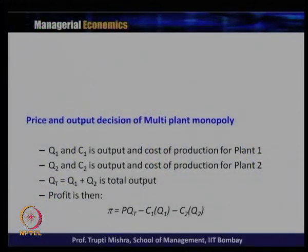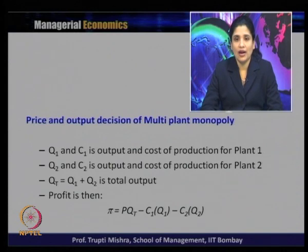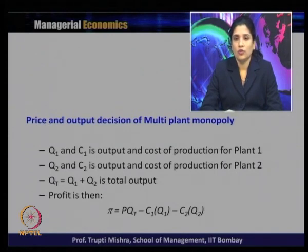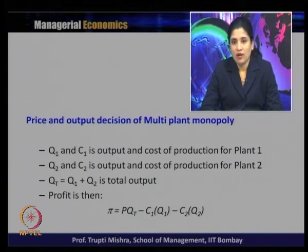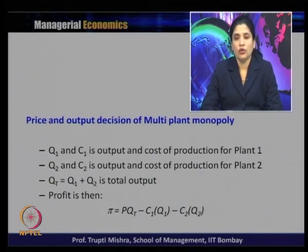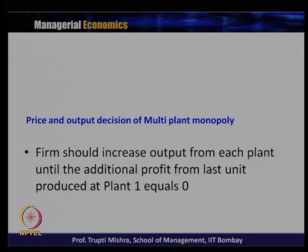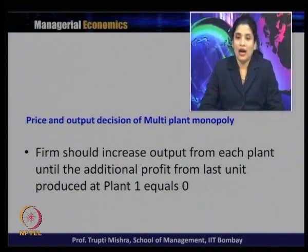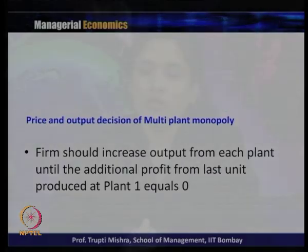If Q1 is output and C1 is the cost of production for Plant 1, Q2 is output and C2 is the cost for Plant 2, then total output Q equals Q1 plus Q2, and profit equals P·Q minus C1(Q1) minus C2(Q2). The firm increases output from each plant until the additional profit from the last unit produced equals zero. The firm keeps increasing output in each plant as long as there is positive profit, and stops when profit goes to zero.